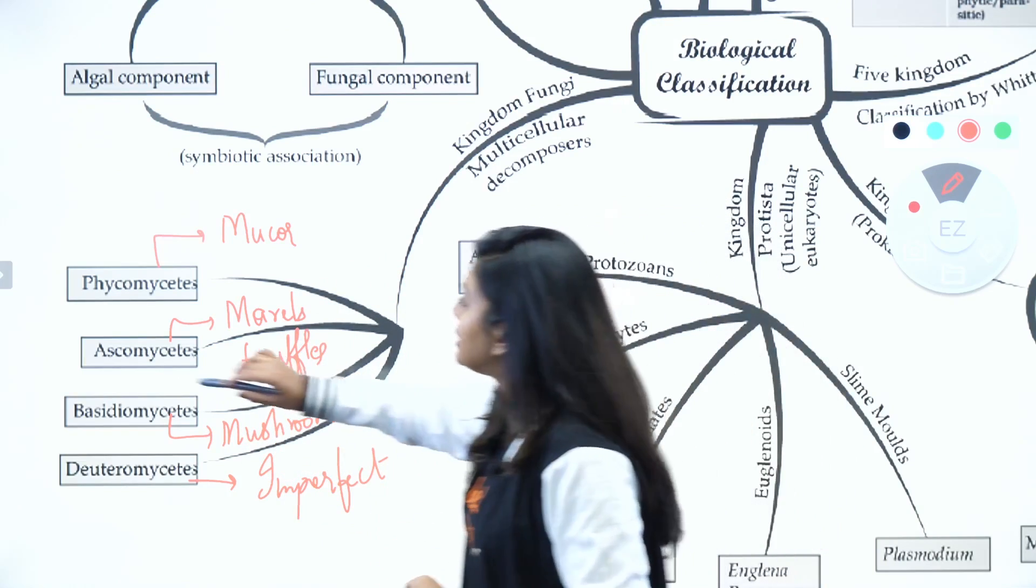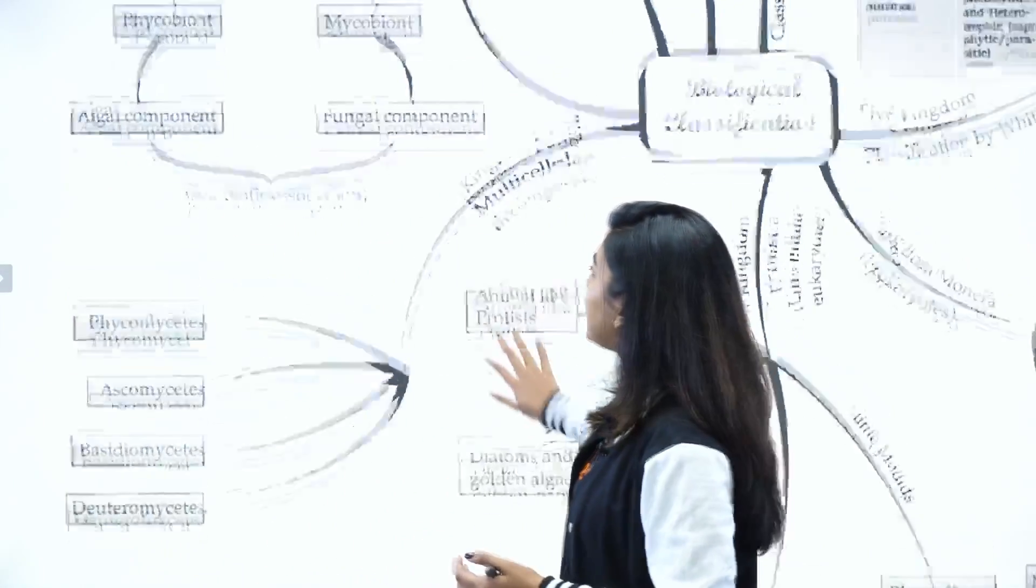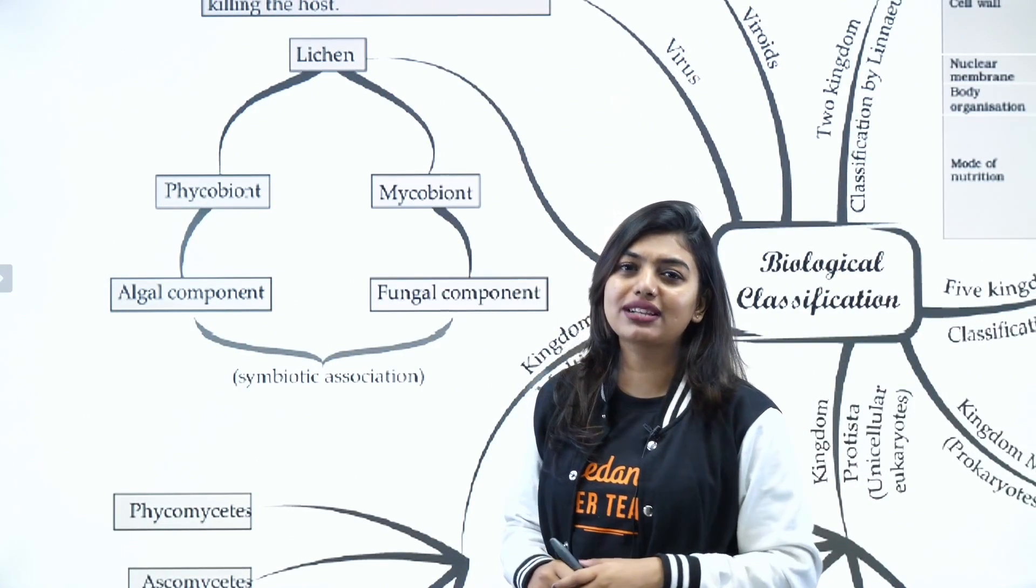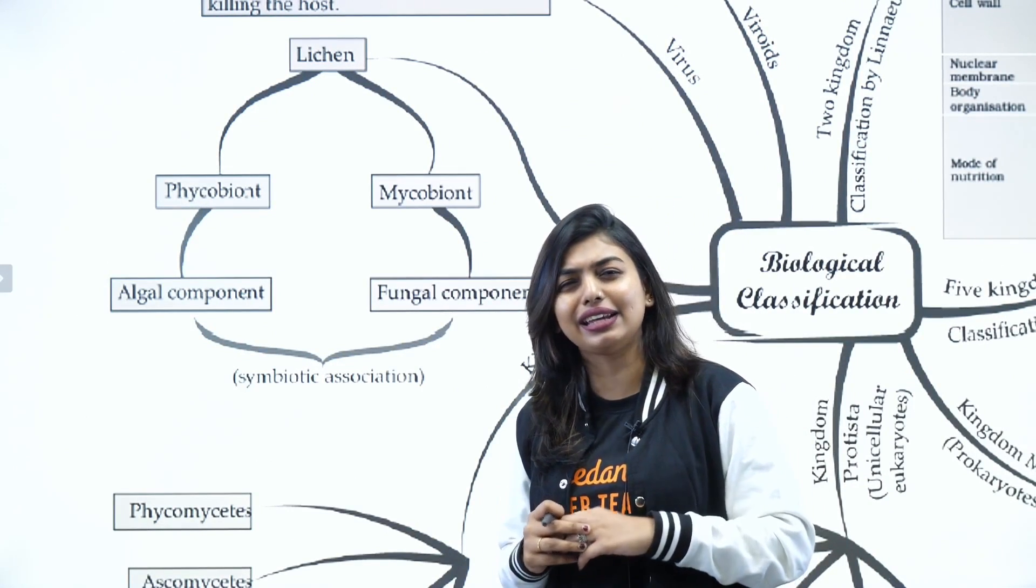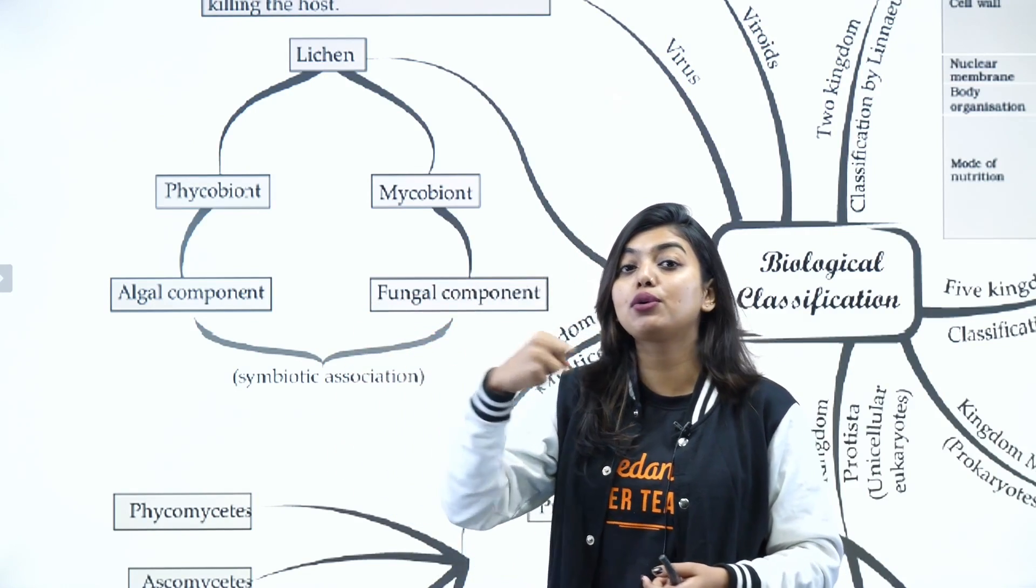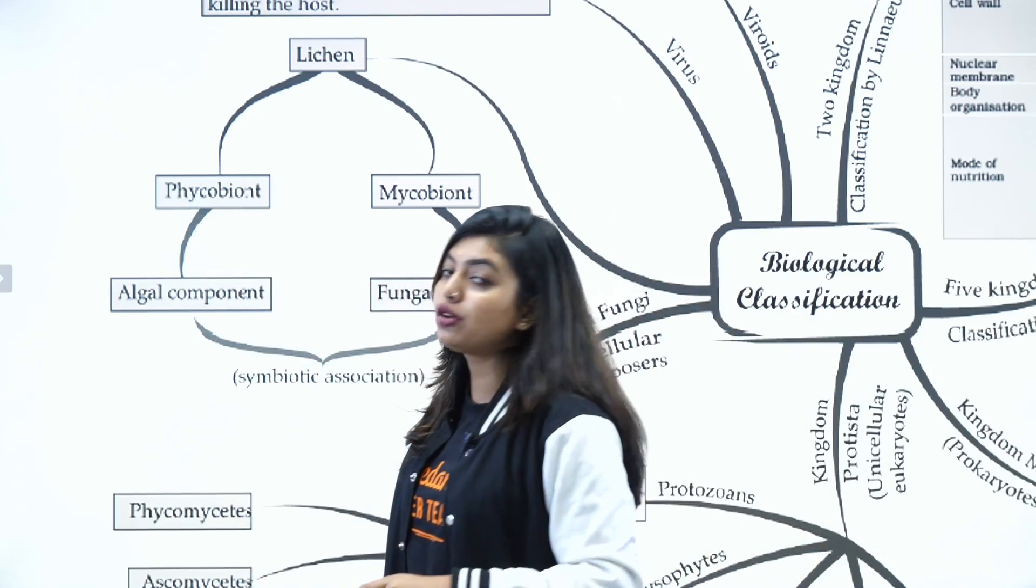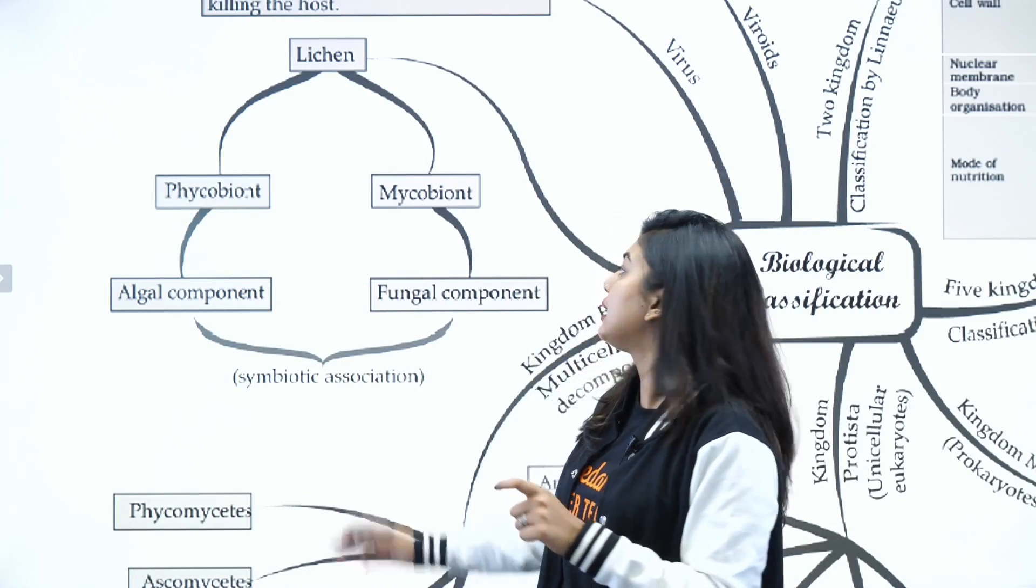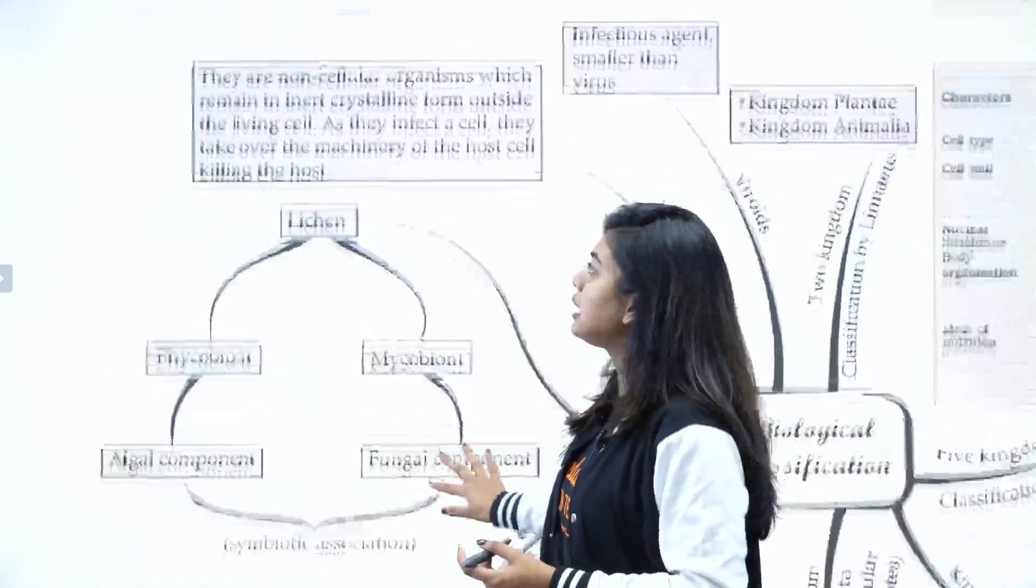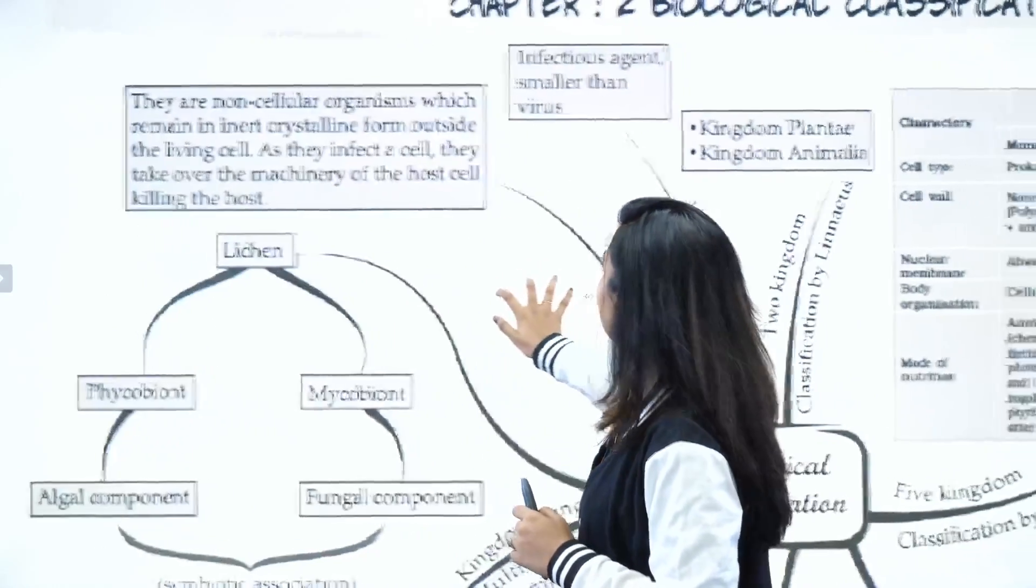Then when we come further, there are some people whom we are not able to put into any kingdom - that is your lichens. Lichens are basically a symbiotic association between fungus and algae. What do they do to each other? Algae provides food to the fungi, and fungi provides shelter to algae. The main word that you need to remember is that phycobiont means the algal component of lichen, and mycobiont means the fungal component of lichen. This will be seen in areas where the pollution is completely less.